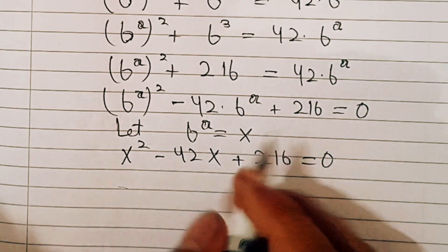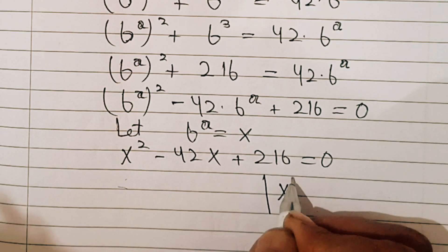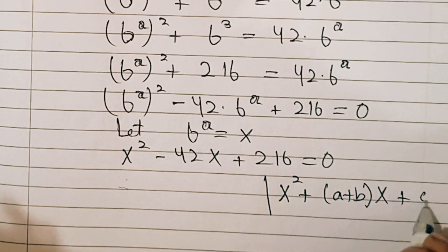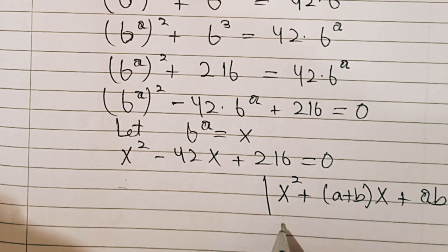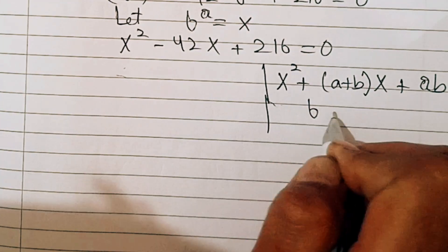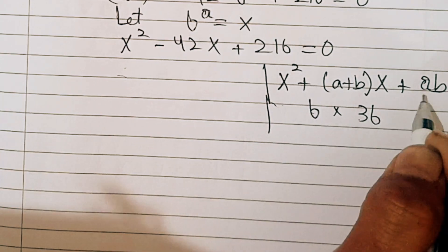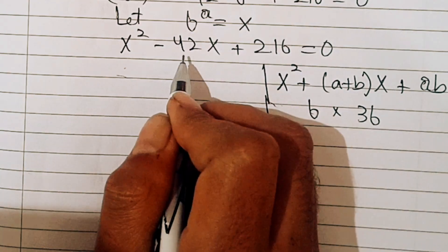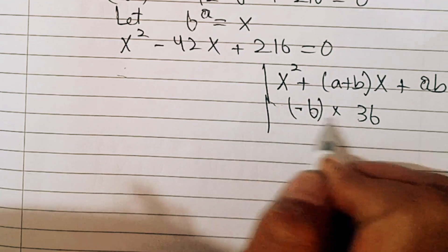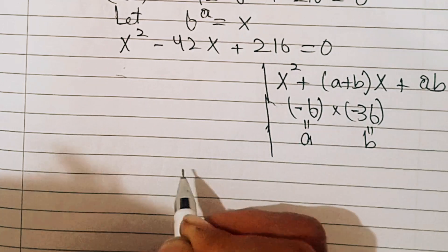Now in order to factorize this, we recall that x squared minus (a plus b)x plus a times b. We can factorize 216 as 6 times 36, because 6 times 36 is 216 and 6 plus 36 is 42. Since the middle term is negative, both numbers should be negative: a equals minus 6 and b equals minus 36.